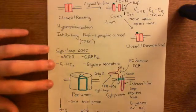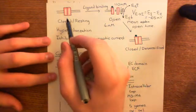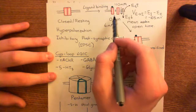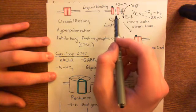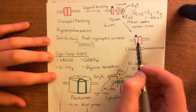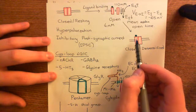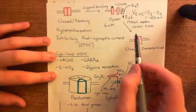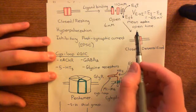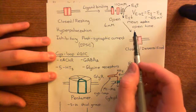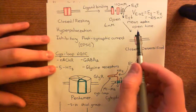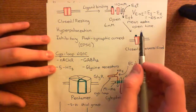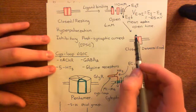The glycine receptor starts off in this closed resting state. When the ligand binds, it goes into the open state. Then after a certain amount of time, it goes into the closed desensitized state. What will happen then is the neurotransmitter will be removed from the synaptic cleft — because when you release a neurotransmitter, you don't just leave it there forever. You either break it down or re-uptake it; it's removed from the synaptic cleft.